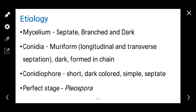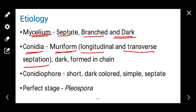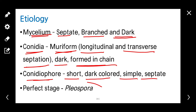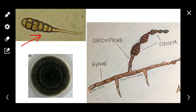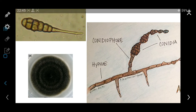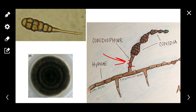Coming to etiology of Alternaria. Alternaria belongs to subdivision Deuteromycotina. The mycelium is septate, branched, and dark in color. The conidia are muriform, meaning both longitudinal and transverse septations are present. They are dark and form chains. Conidiophores are short, dark-colored, simple, and septate. The perfect stage is Pleospora. The conidia show both transverse and longitudinal septations. The conidiophores are septate and simple. Colony appearance shows characteristic concentric rings.